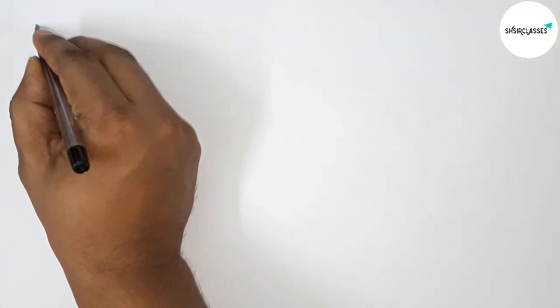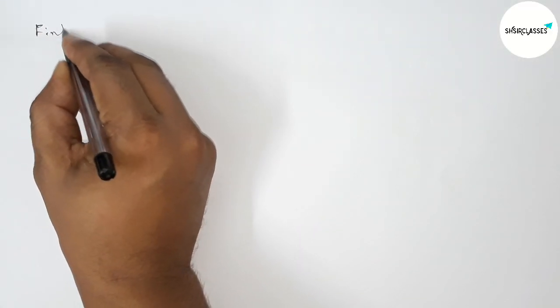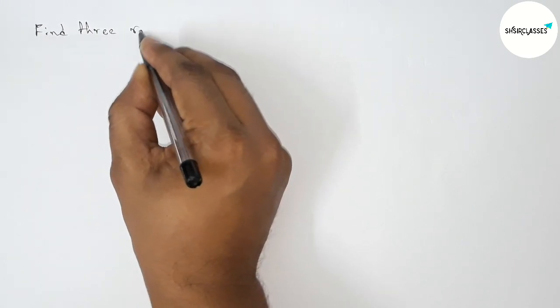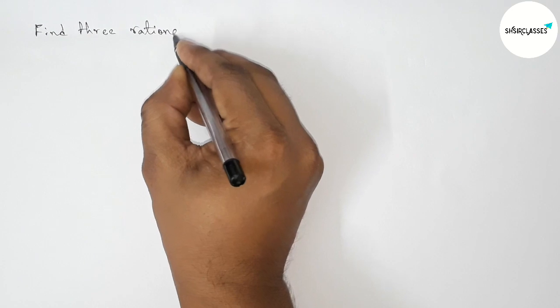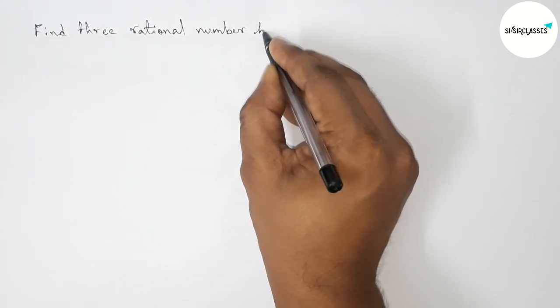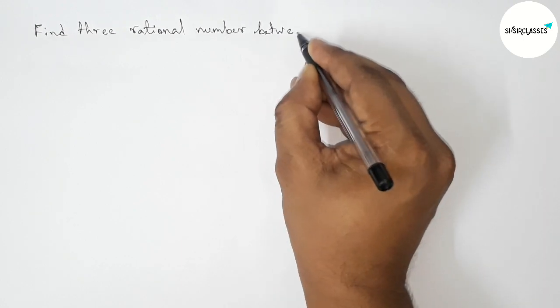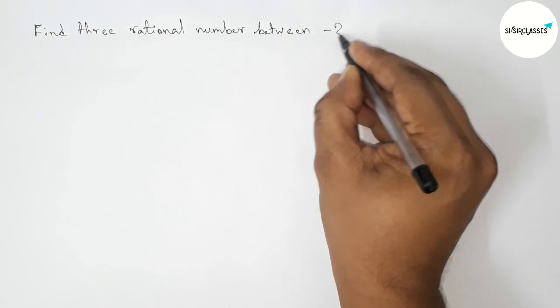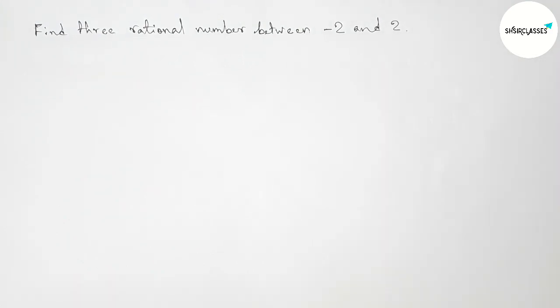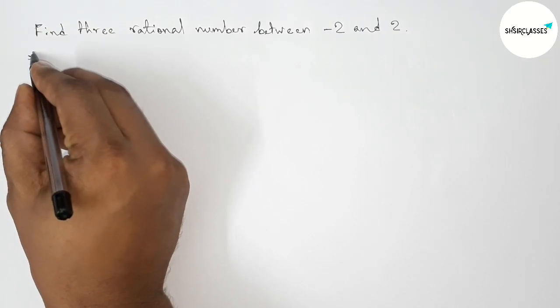Hi everyone, welcome to SH Sir Classes. Today in this video we have to find three rational numbers between minus two and two in an easy way. So please watch the video till the end. So let's start the video.